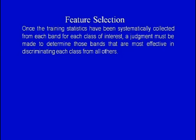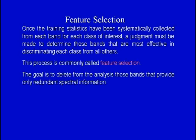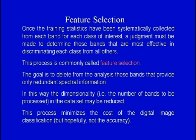Once training data has been systematically collected from each band for each class of interest, a judgment must be made to determine which bands are most effective in discriminating each class from all others — a process commonly called feature selection. The goal is to delete from the analysis those bands that provide only redundant spectral information, thereby reducing the dimensionality of the data set and minimizing the cost of digital image classification.